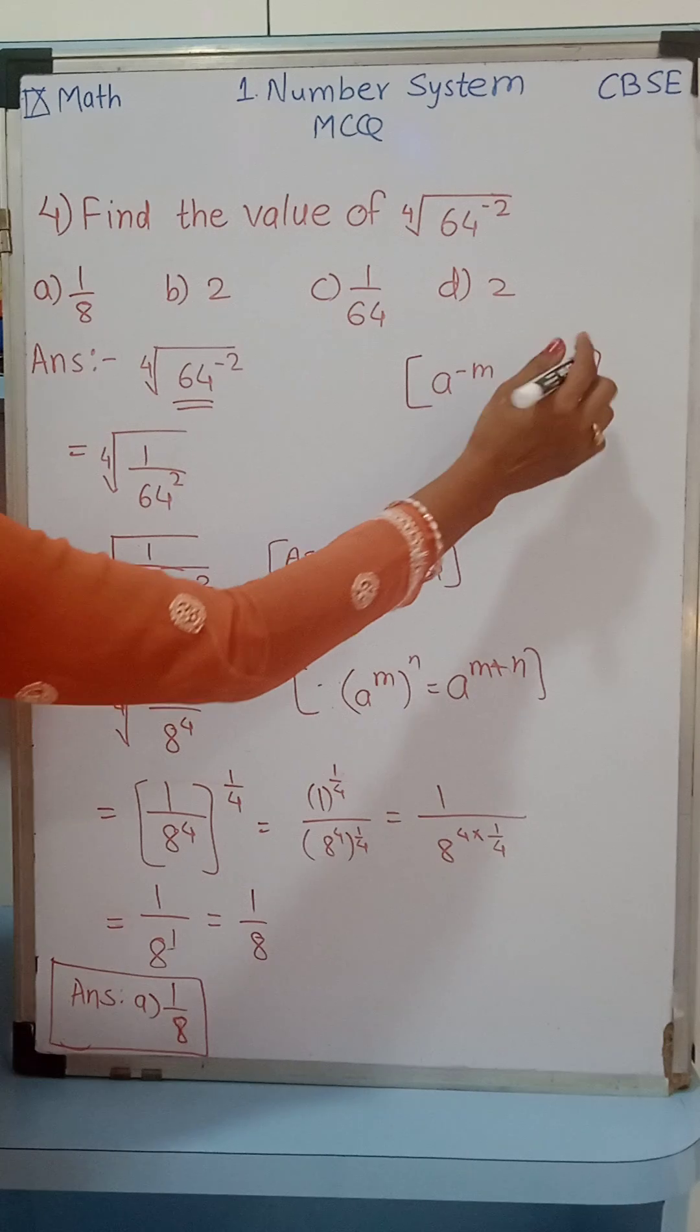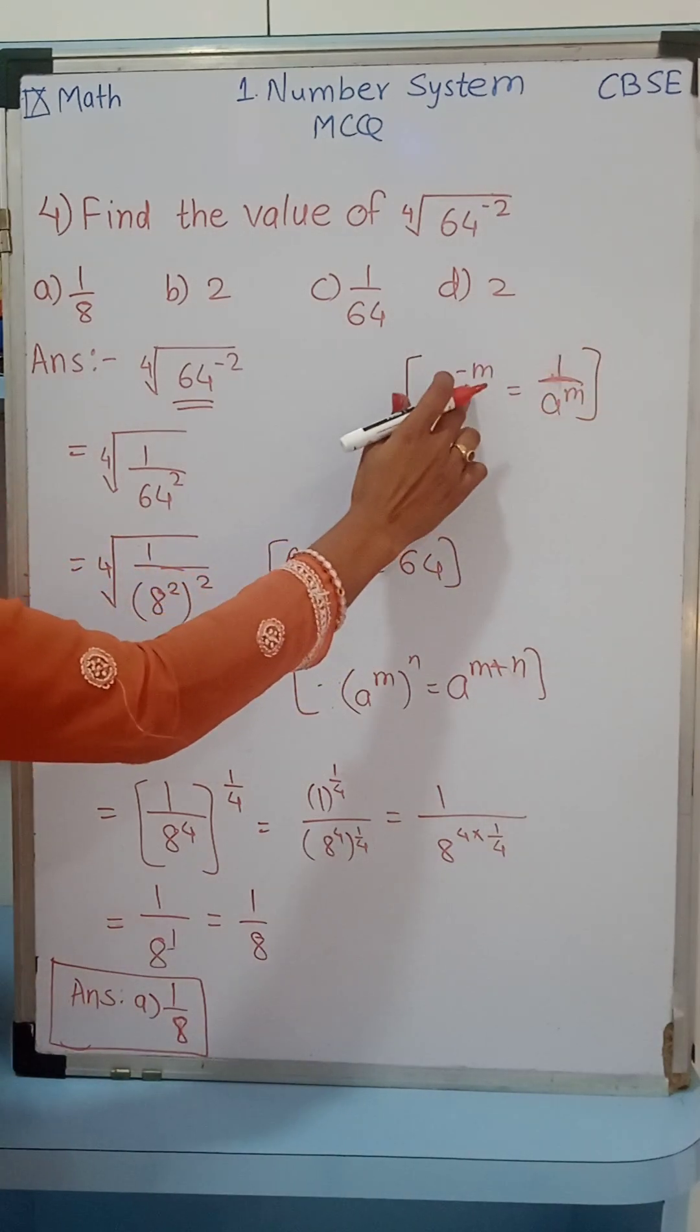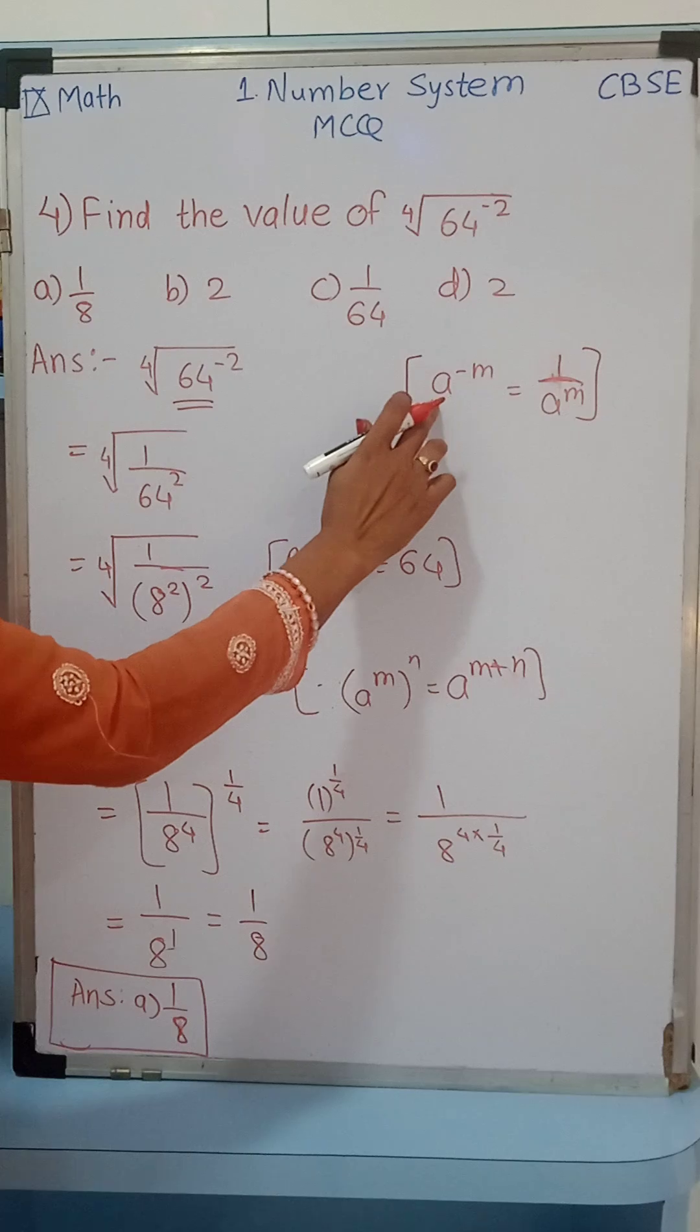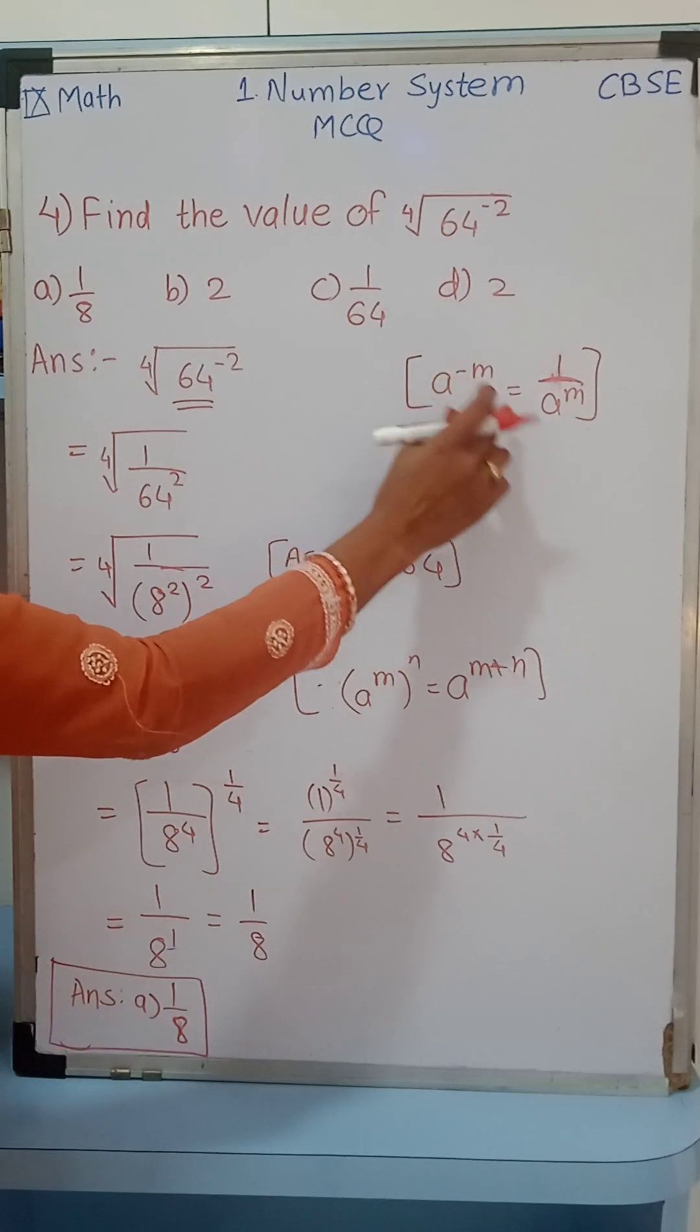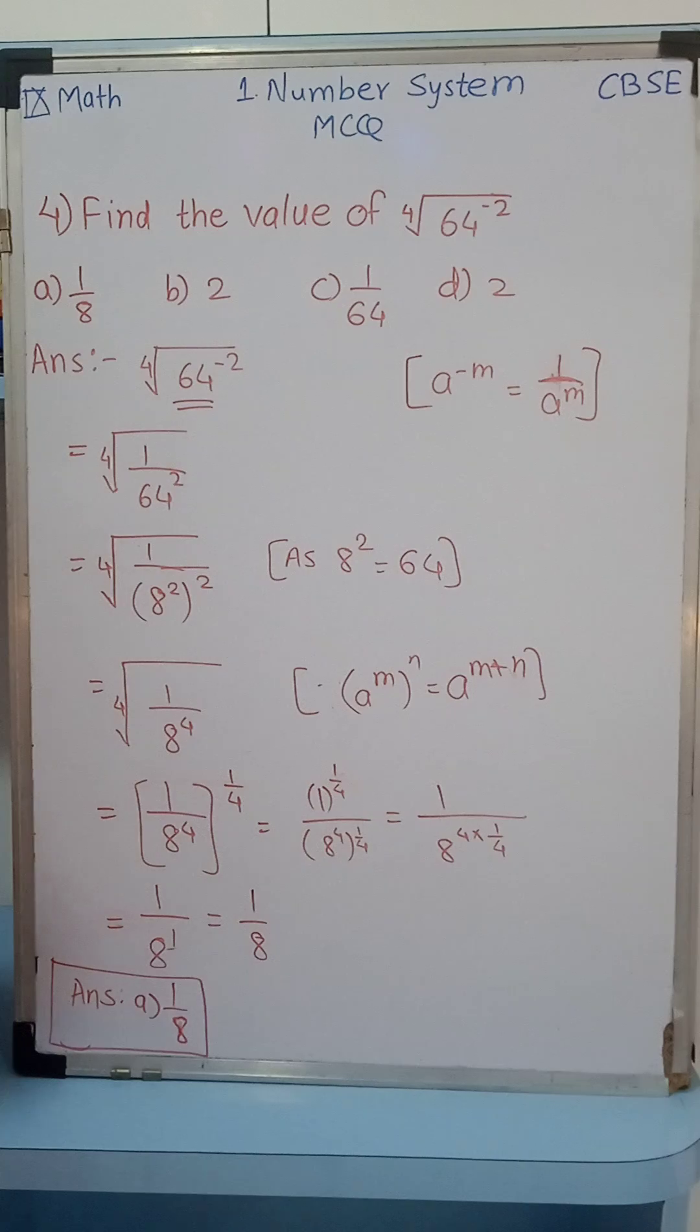we just change the base from numerator to denominator, the sign will be reversed. Though it is in the numerator with the minus power sign, if it is shifted to the denominator, the sign becomes positive. So this is 1 over a raised to m.